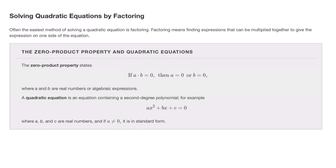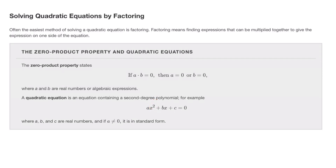A quadratic equation is an equation containing a second degree polynomial — for example, ax² plus bx plus c — where the highest power is two, and where a, b, and c are real numbers. If a is not zero, it's in standard form.